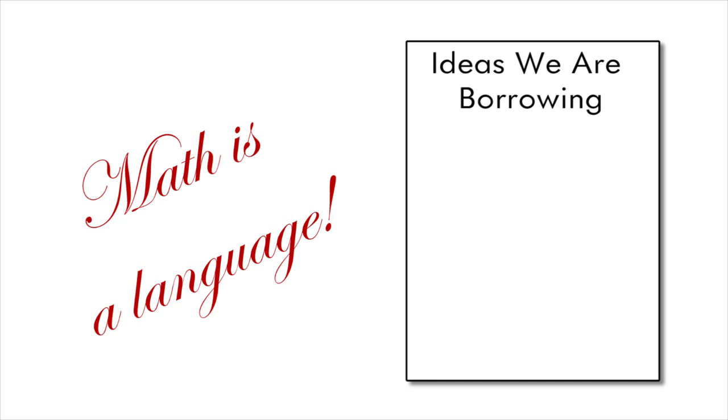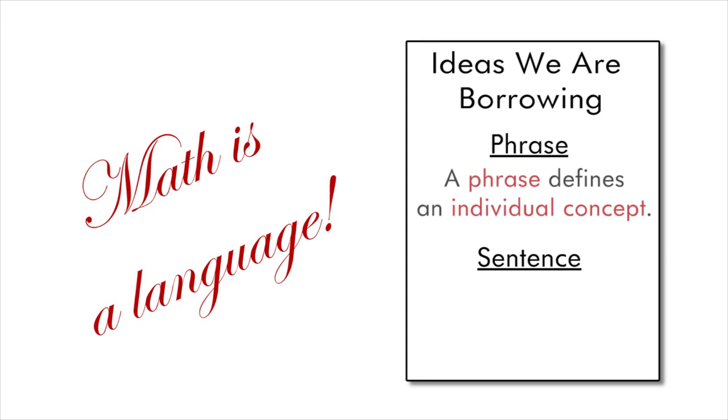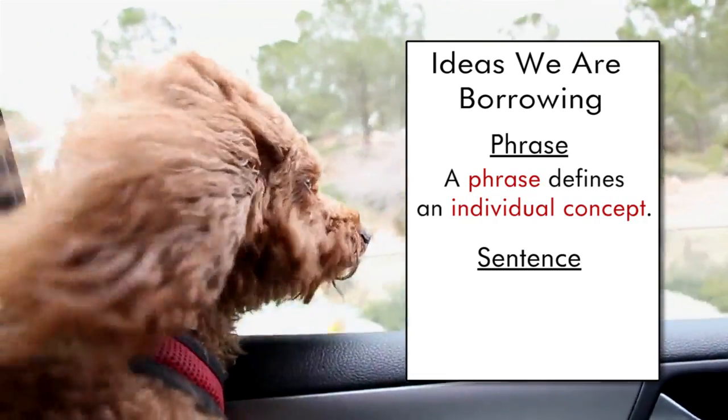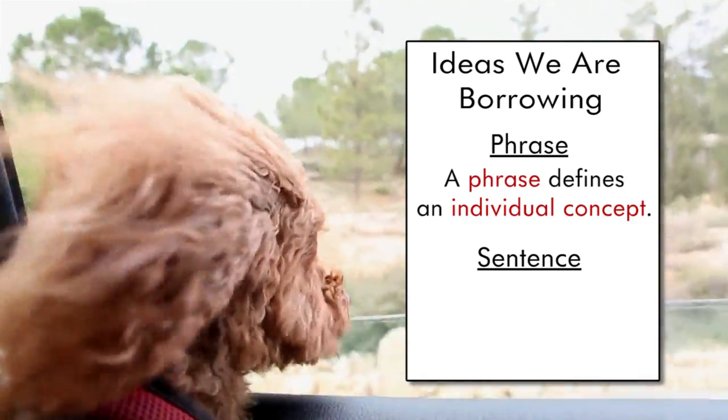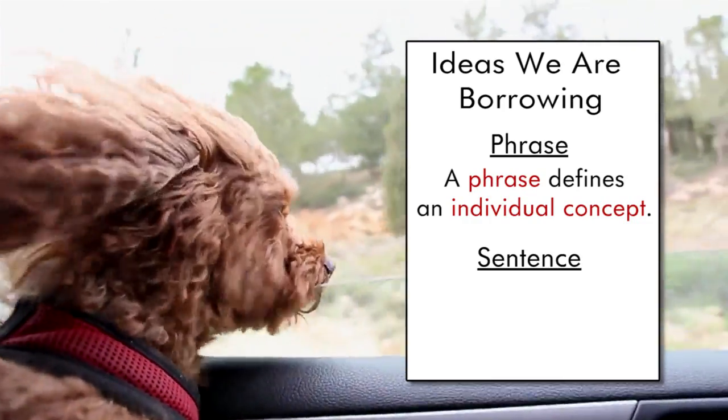For example, in the English language, we can talk about phrases and sentences. A phrase, like 'a happy dog,' defines an individual concept. It's descriptive, but it leaves us wanting more. It does not tell us the whole story.